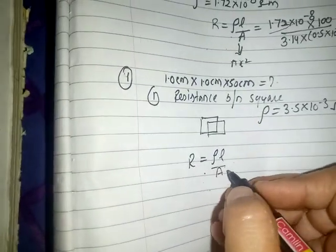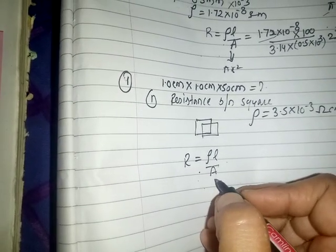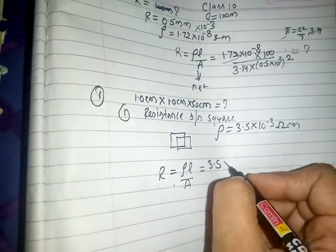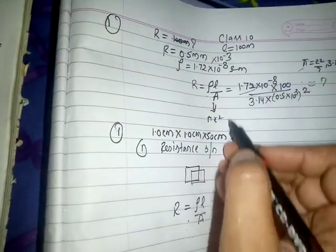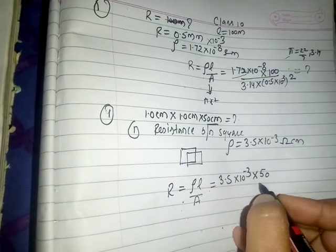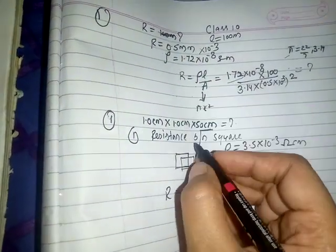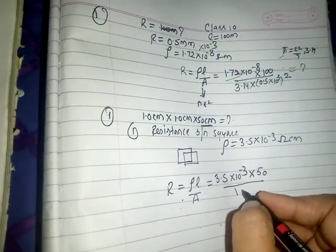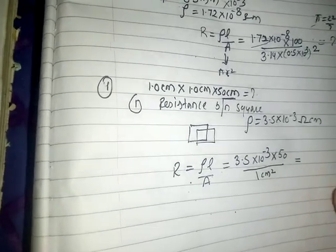Apply the values: rho is 3.5 into 10 to the power minus 3, length is 50 centimeter, and area is length times breadth, which is 1 cm × 1 cm equals 1 centimeter squared. If you solve all these, you will definitely get the answer.